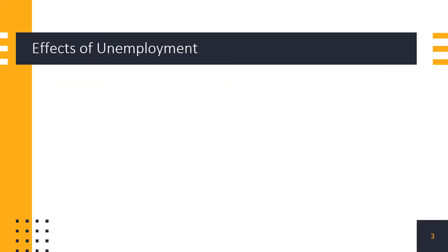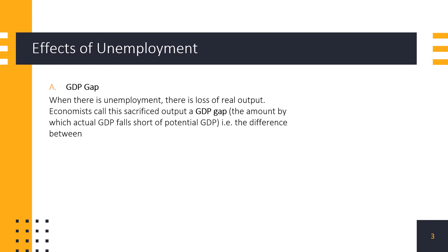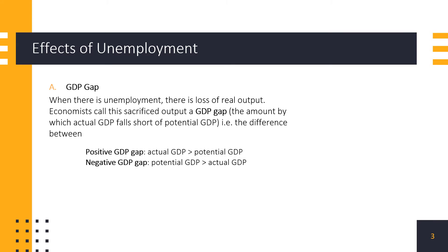Now let's move on to the effects of unemployment. The first is loss of output, better known as the GDP gap. When unemployment is happening, many people aren't working, so we are experiencing potential loss of productivity. That is why high unemployment is related to loss of real output. Economists call this sacrificed output a GDP gap, which is the amount by which actual GDP falls short of potential GDP — in other words, the difference between actual and potential GDP.